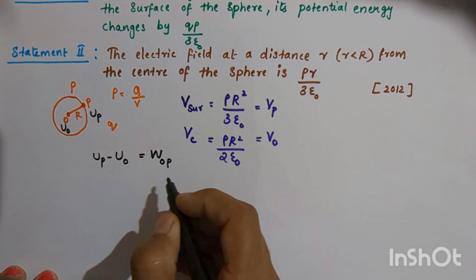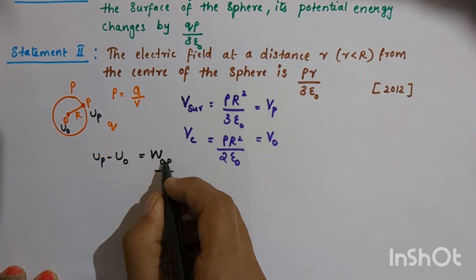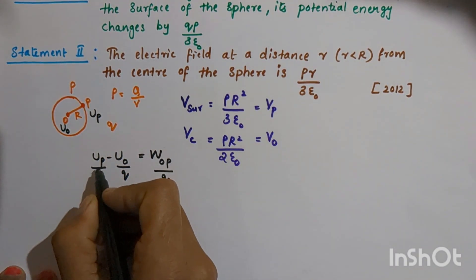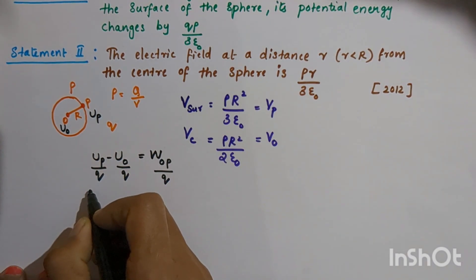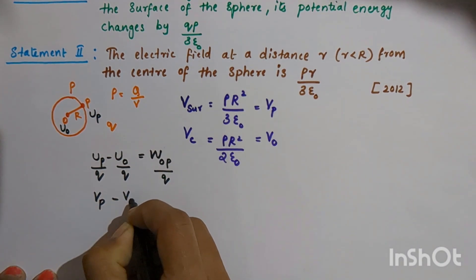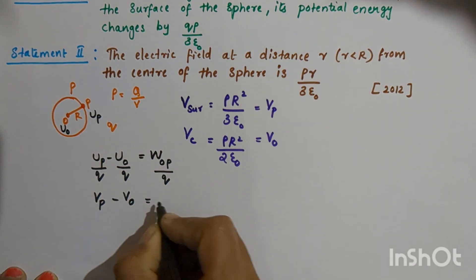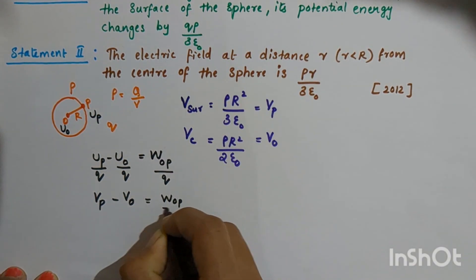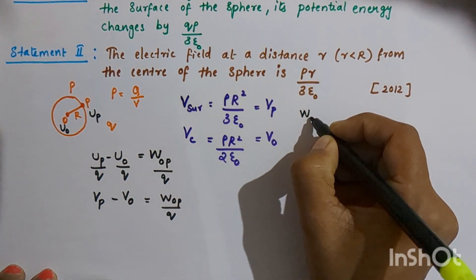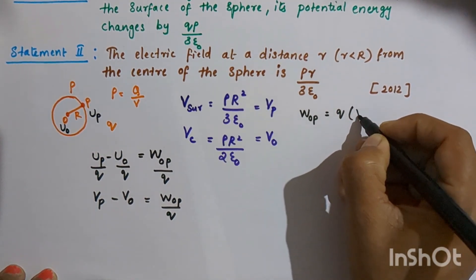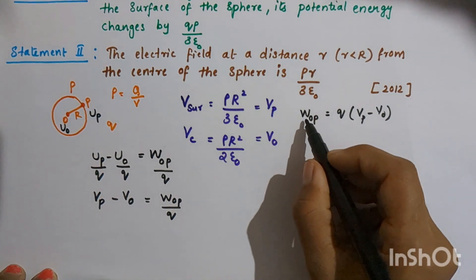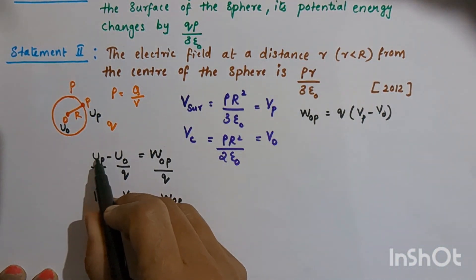If we take the work done per unit charge, that is W_OP divided by Q, then potential energy per unit charge gives us the potential. So we can write V_P minus V_O equals the work done to move a charge from O to P, divided by Q. Therefore, the work done W_OP equals Q into (V_P minus V_O), which is also equal to U_P minus U_O, the potential energy change.